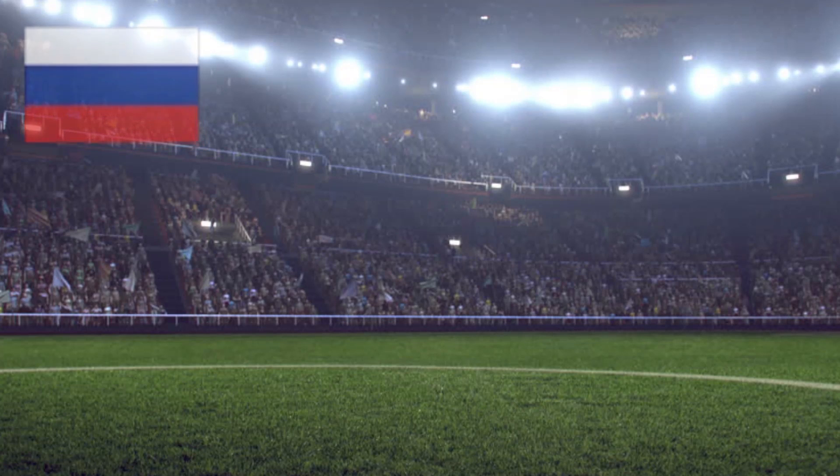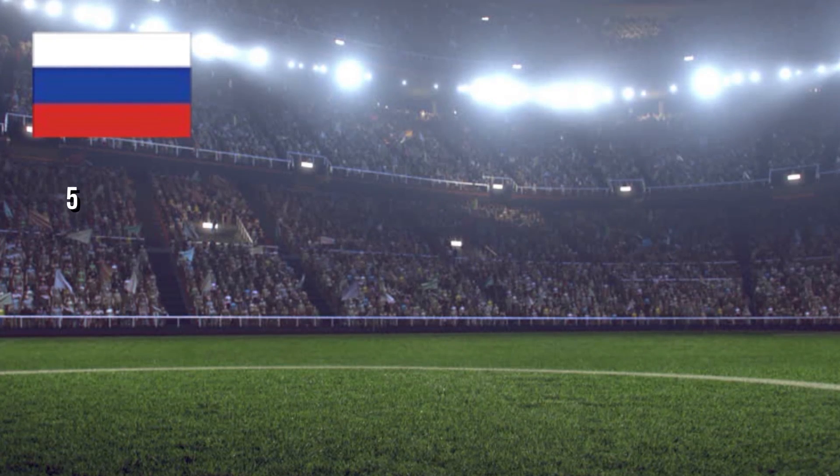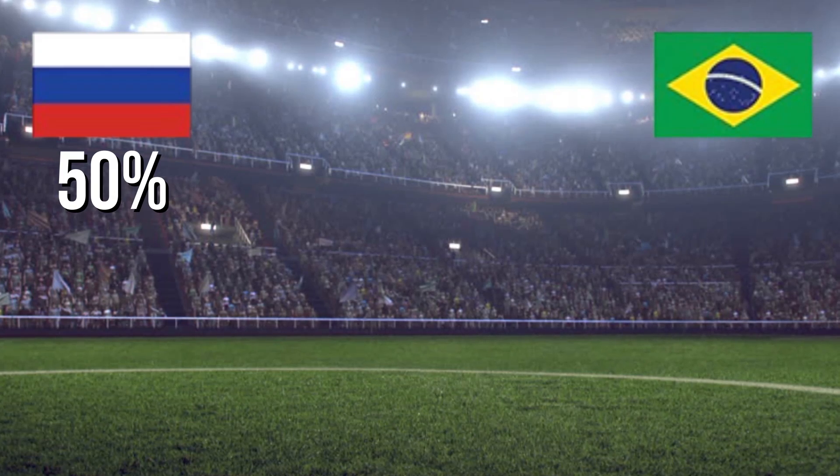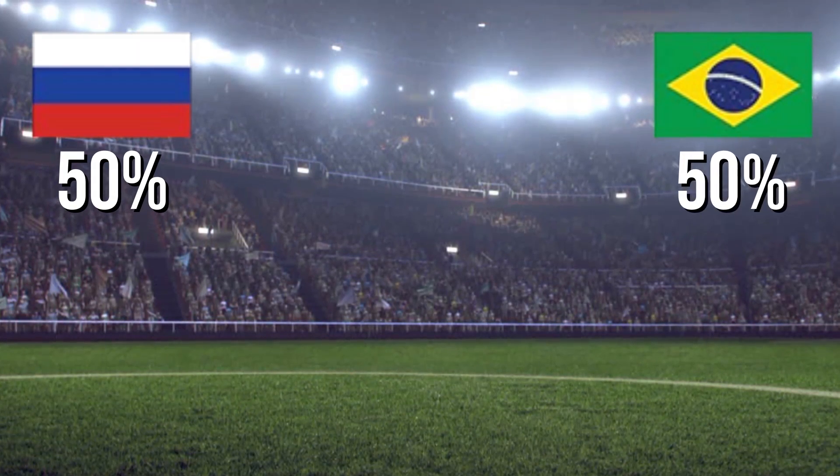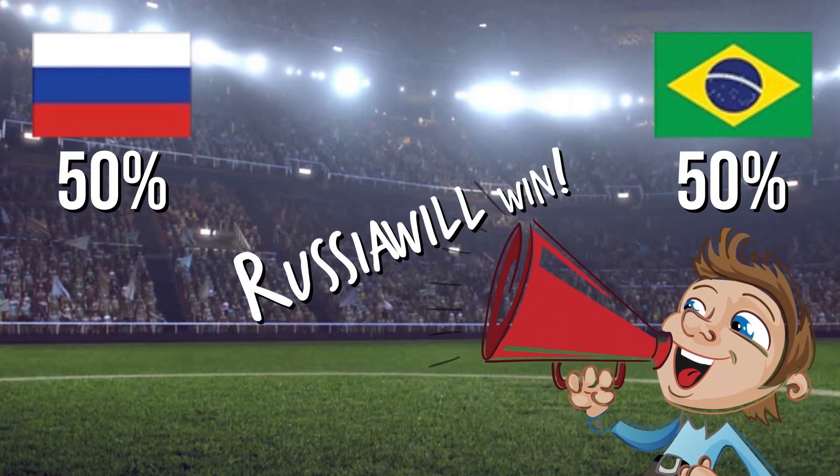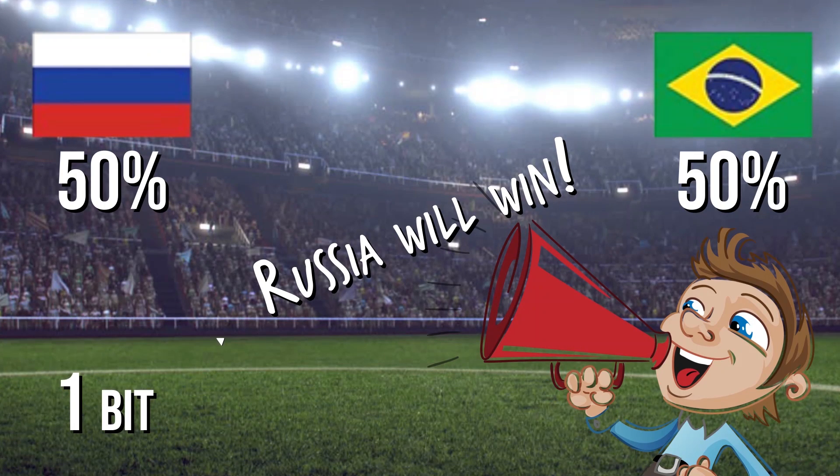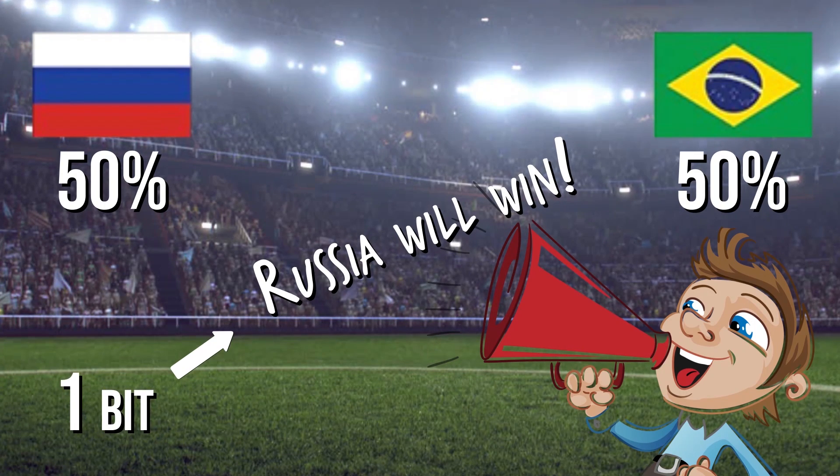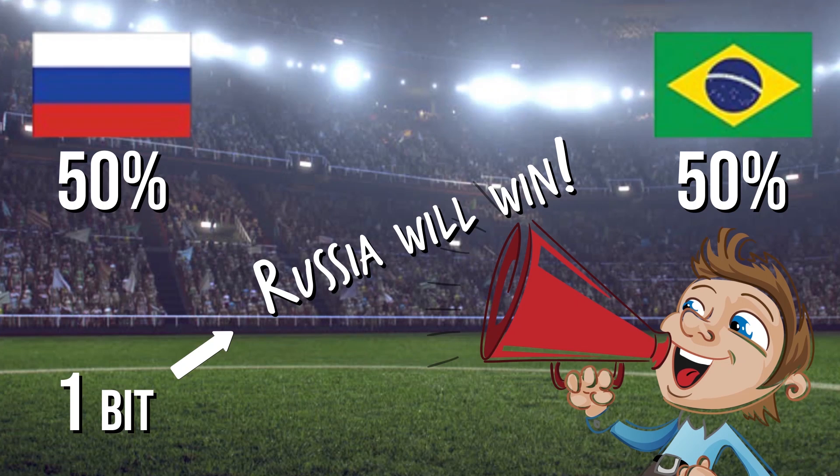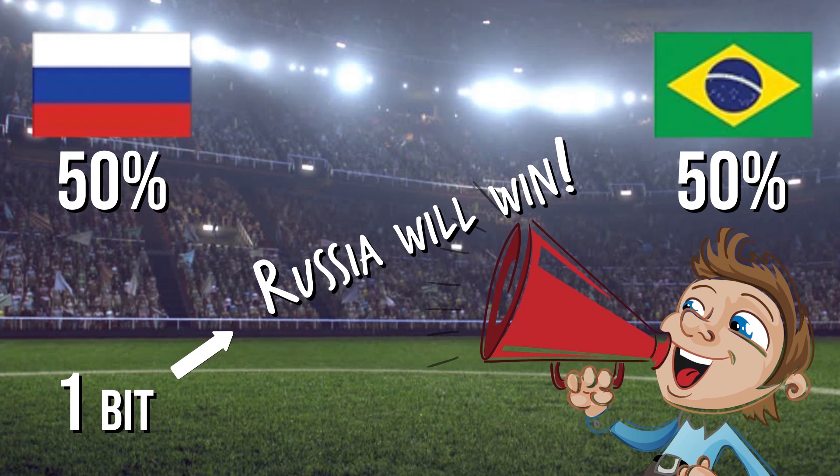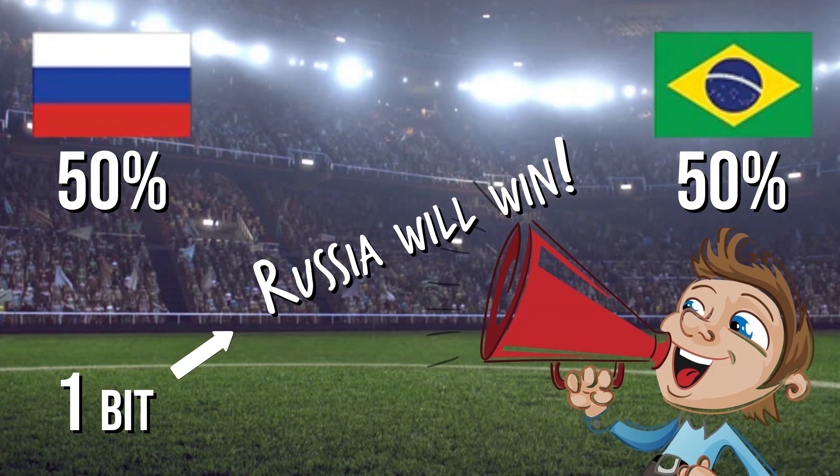For example, say that two teams are playing against each other in the World Cup with a 50-50 chance of either team winning. If a prediction service tells us that one team will win, they've reduced our uncertainty by a factor of two. There were two equally likely outcomes, now there's just one. The prediction service sent us a single bit of useful information.